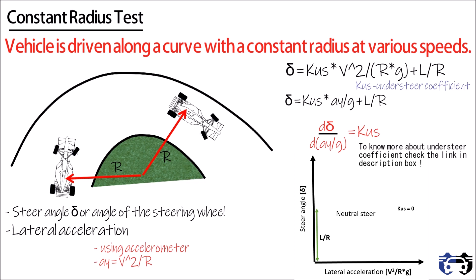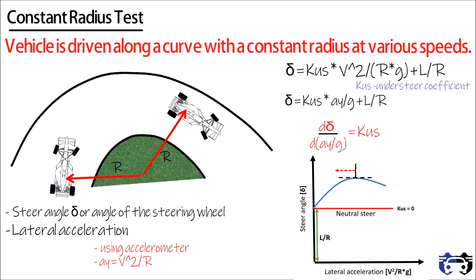When kus equals 0, the car will have neutral steer and the slope will be 0. When the understeer coefficient kus is not equal to 0, we get the following curve. At the maximum point, moving towards the left the slope is positive, so kus is greater than 0 and we get understeer. Moving towards the right we get negative slope and kus is less than 0, so we get oversteer. Hence, for a constant radius, at a particular speed the car moves from the understeer region to the oversteer region.